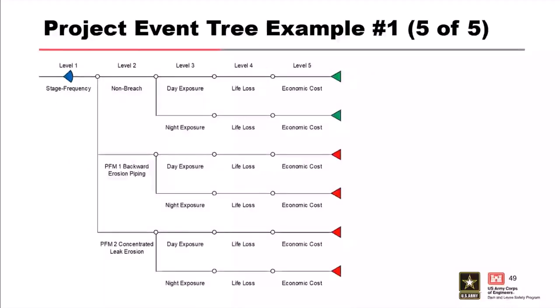Using information from the three steps, we draw the project event tree for Sharp Top Dam. Level one is stage frequency, level two is system response, level three is exposure, and levels four and five are consequences.